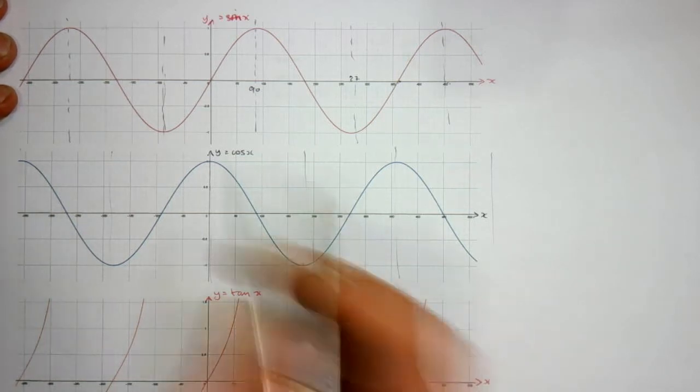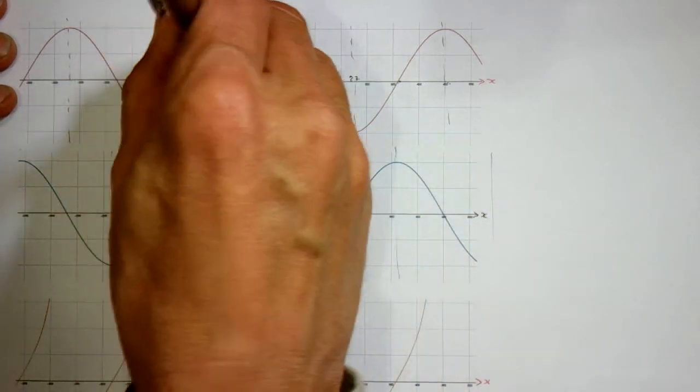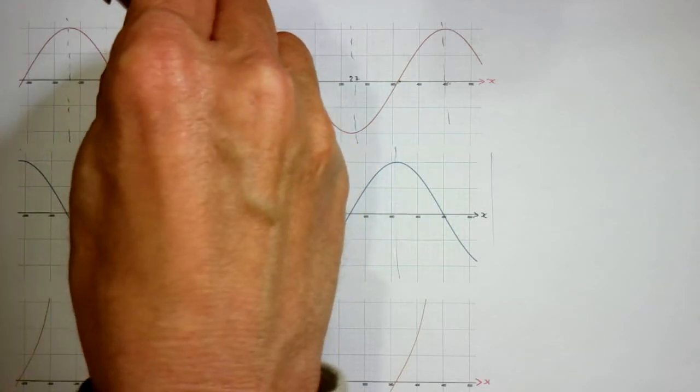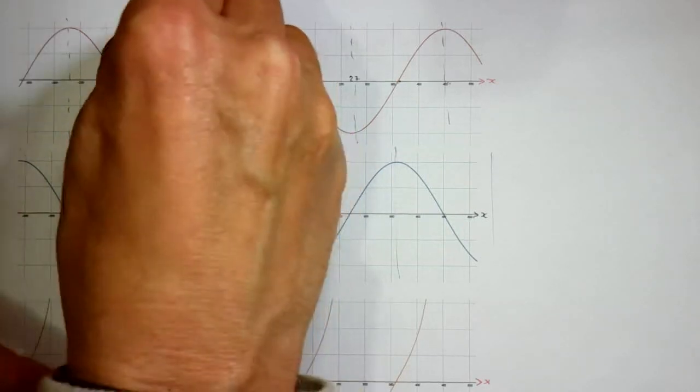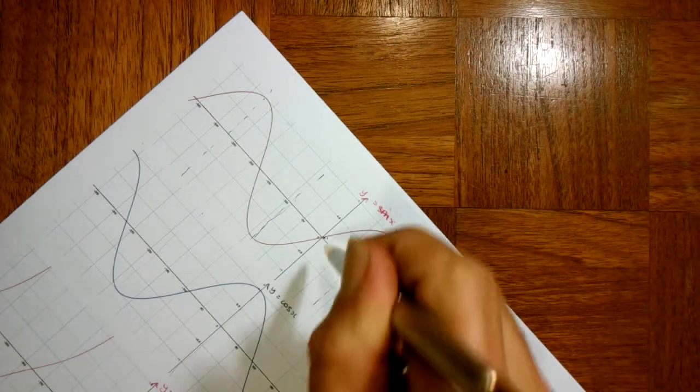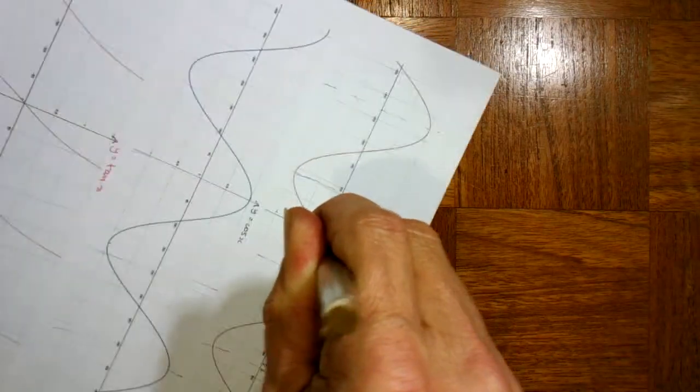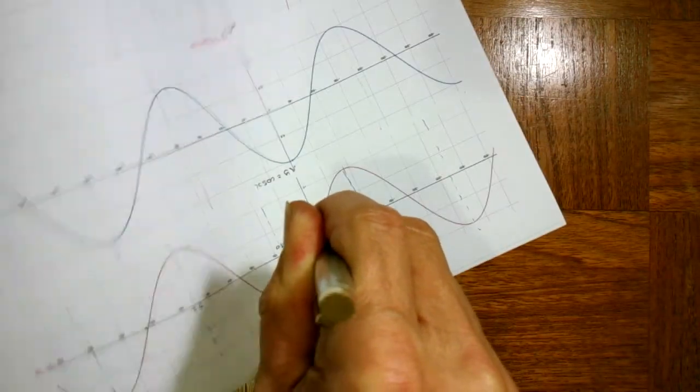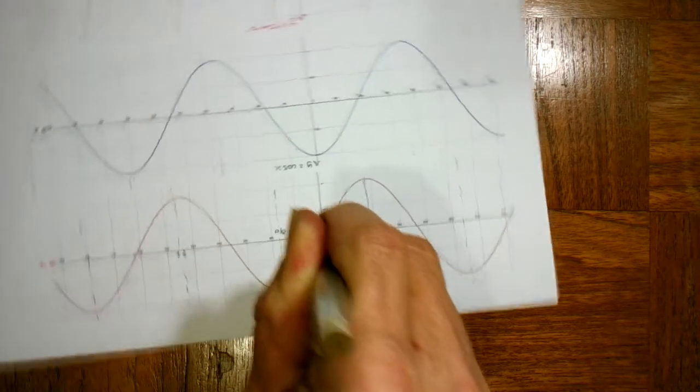They've all got rotational symmetry. The sine graph is rotationally symmetrical about 0. If we turn it around and look about 0, it's the same. It looks exactly the same as it did before.